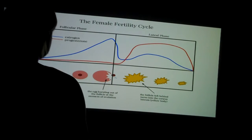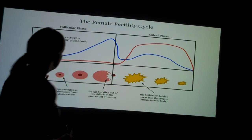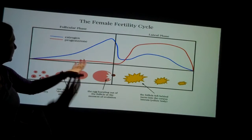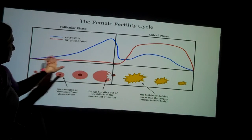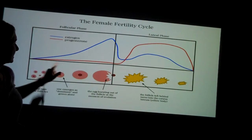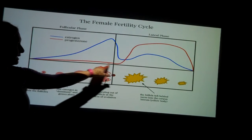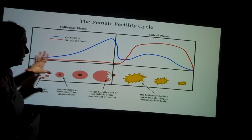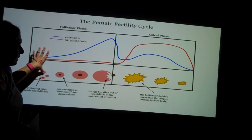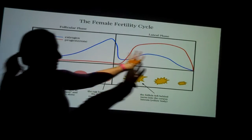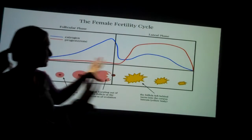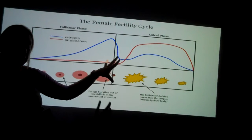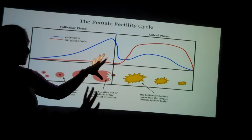A couple things about the female menstrual cycle. When you look at this picture here, the blue line represents estrogen, the red line represents progesterone. This represents the menstrual cycle.